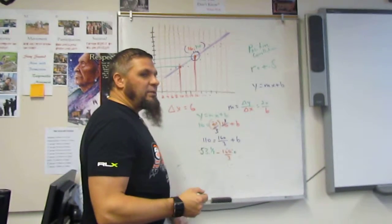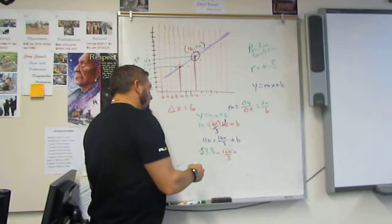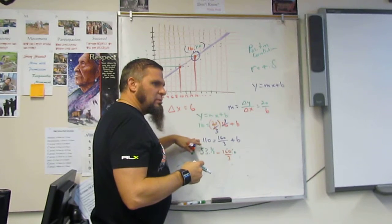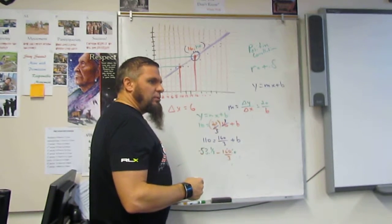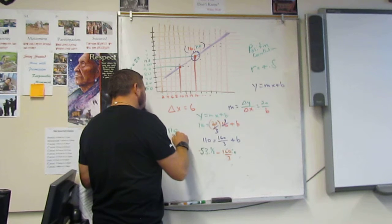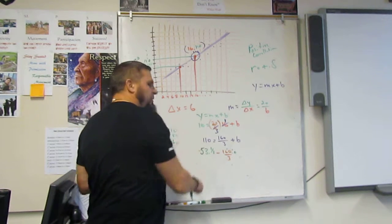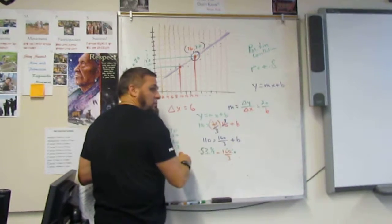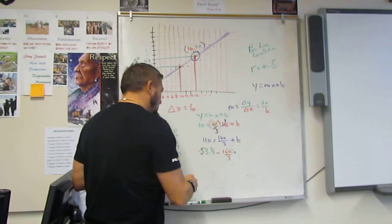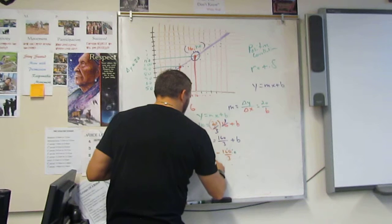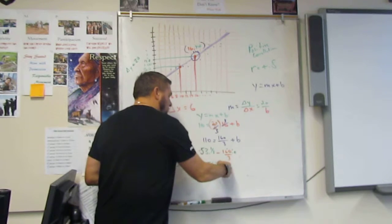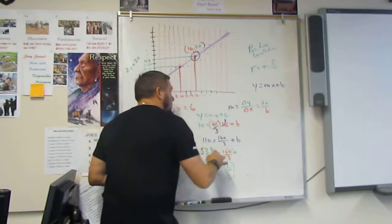If I take that away from 110, if I take 53 away from 110, what do I get? 53 from 110. So 50 from 110. So 110 minus 50 is going to give me 60. 3 from 60. 57. And a third from 57. 56 and two-thirds. So we have B. We have M.